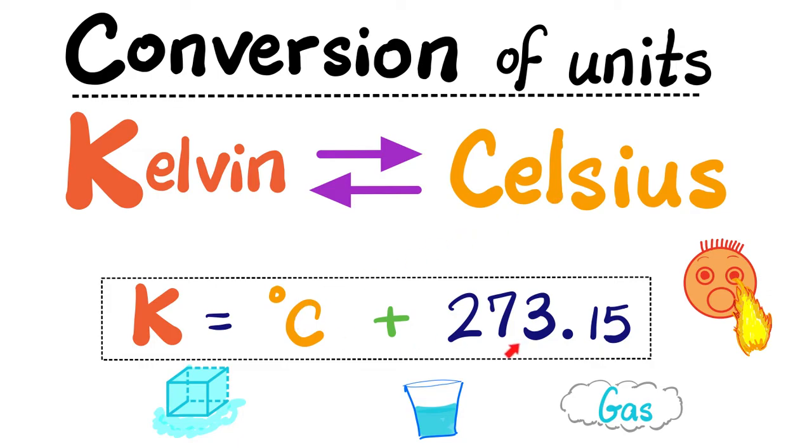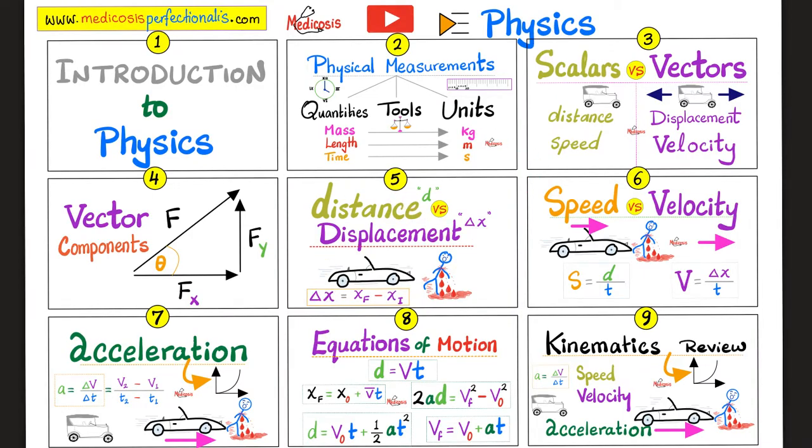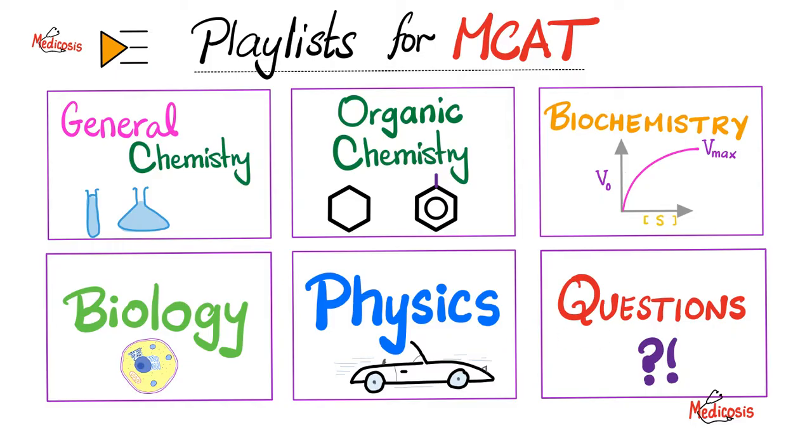Also please watch the previous video before this one. You can find all of my physics videos in my physics playlist. Try to watch them in order for maximum understanding and retention. And check out the other playlists as well. Let's practice. Adam has a core body temperature of 37 degrees Celsius. Convert this temperature to Fahrenheit.